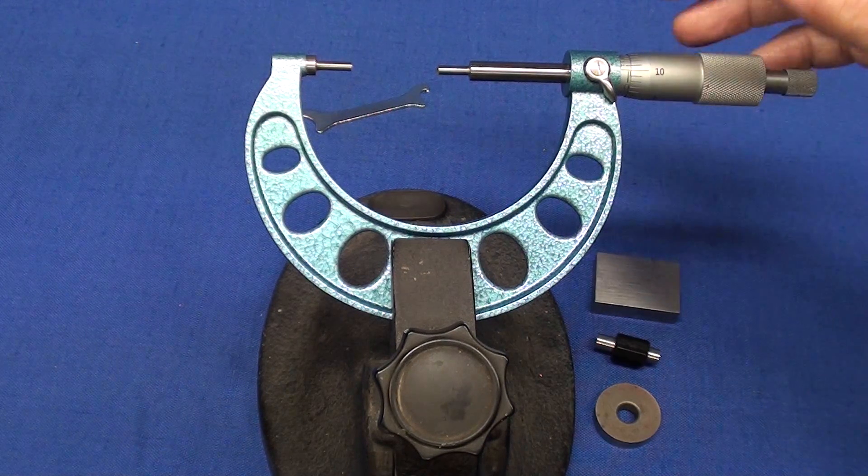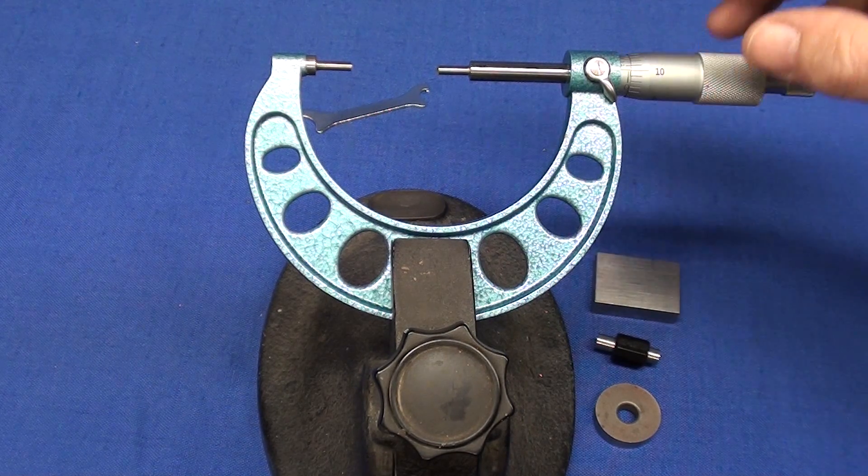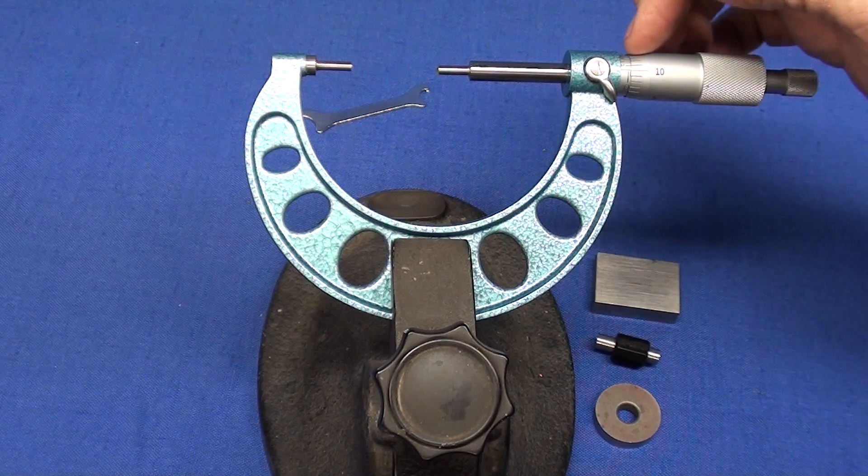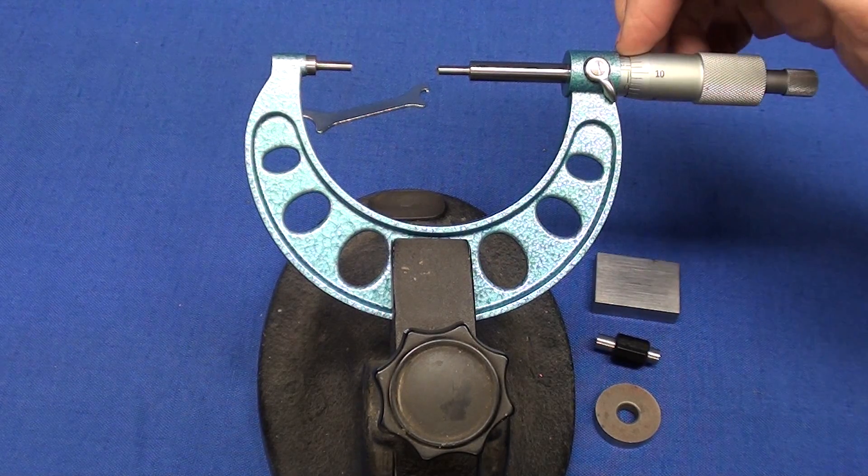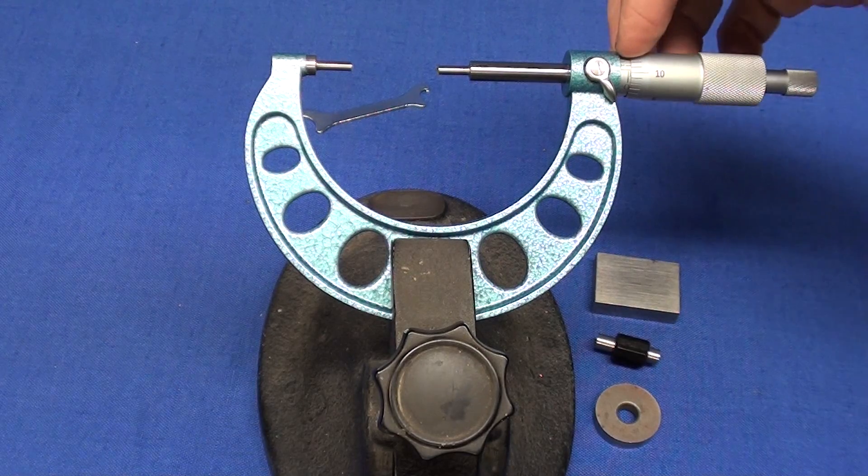By the way, this micrometer will read in tenths of a thousandth too, as evidenced by the extra graduations, the vernier graduations on the back of the barrel.